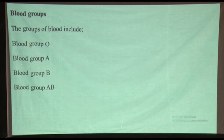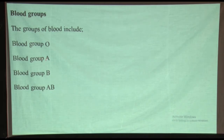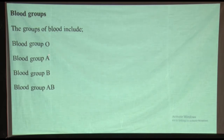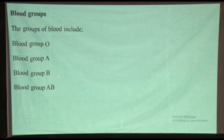You need to look at each blood group here and see which is a universal recipient and which is a universal donor. For example, blood group O cannot receive from A, cannot get from B, cannot get from AB, but can give to all other groups — can give to B, can give to A, can give to AB. So it is a universal donor — it gives, it donates.